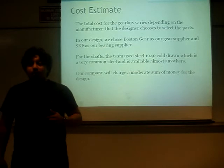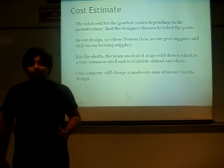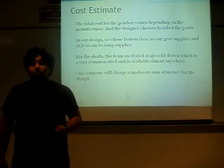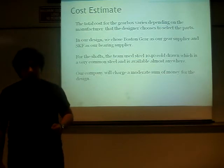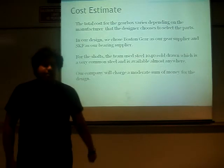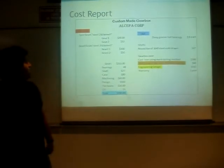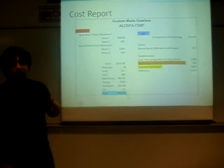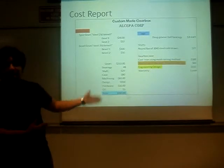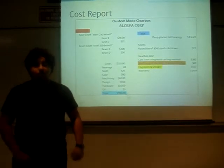The total cost for the gearbox varies depending on the manufacturer the designer chooses. In our design, we chose Boston Gear as a gear supplier and SKF as a bearing supplier. For the shaft, the team used AISI 1040 steel cold drawn, which is a very common steel and is available almost anywhere. Our company will charge a moderate sum for the design. Here we can see an invoice from our company specifying each one of the prices for the different elements. The total price is $990 for the whole system.